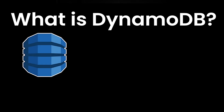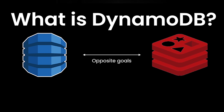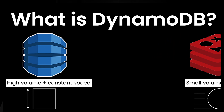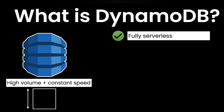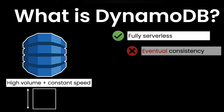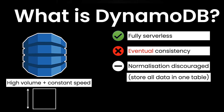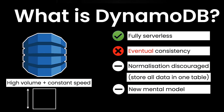Next, DynamoDB by AWS. In a sense, DynamoDB is the opposite of Redis: where Redis aims to respond quickly for a small volume of data, DynamoDB aims to respond at a constant speed for a very large volume of data. It's a fully serverless solution with no fixed costs that can scale down to almost nothing and up to very large applications. To achieve this scaling ability, DynamoDB sacrifices both consistency and normalization. In fact, best practice in DynamoDB is to store all of an application's data in one single table — a concept that is fascinating but also completely destabilizing, and the most difficult part of developing with DynamoDB.